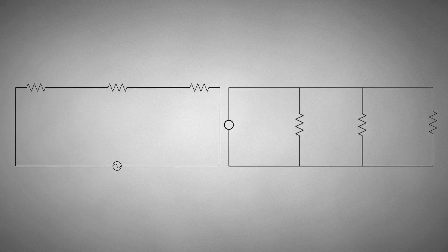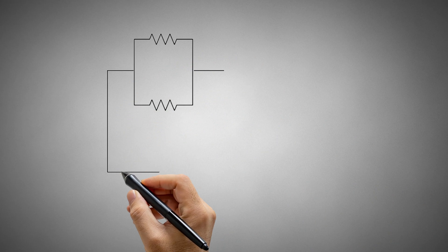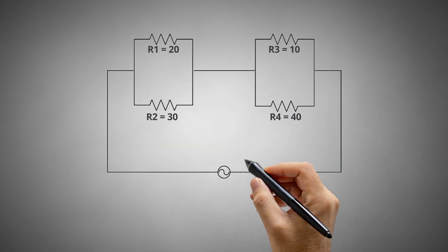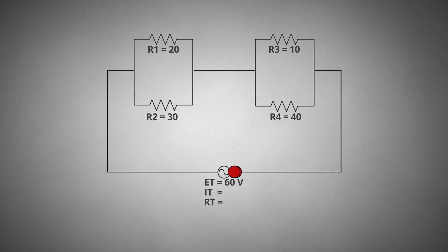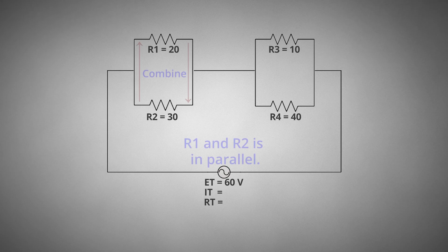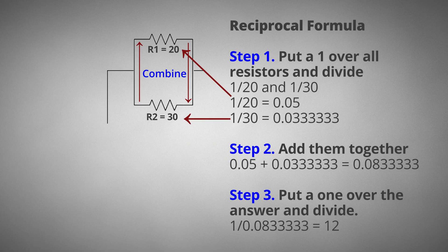As we mentioned before, combination circuits contain both series and parallel circuits. Now that you know the rules for each kind of circuit, let's solve a few. The first thing you should do is identify what type of circuits are present by tracing the current paths. The goal in a combination circuit is to end up with one simple series circuit. This circuit contains parallel circuits which need to be made into series — our first step is to combine the parallel circuit into a series circuit using the reciprocal formula or the 3-step process.